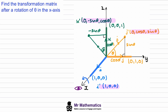So our transformation matrix for rotation about the x-axis is formed from the transformed coordinates: the image of i gives (1, 0, 0), the image of j gives (0, cos theta, sine theta), and the image of k gives (0, negative sine theta, cos theta).